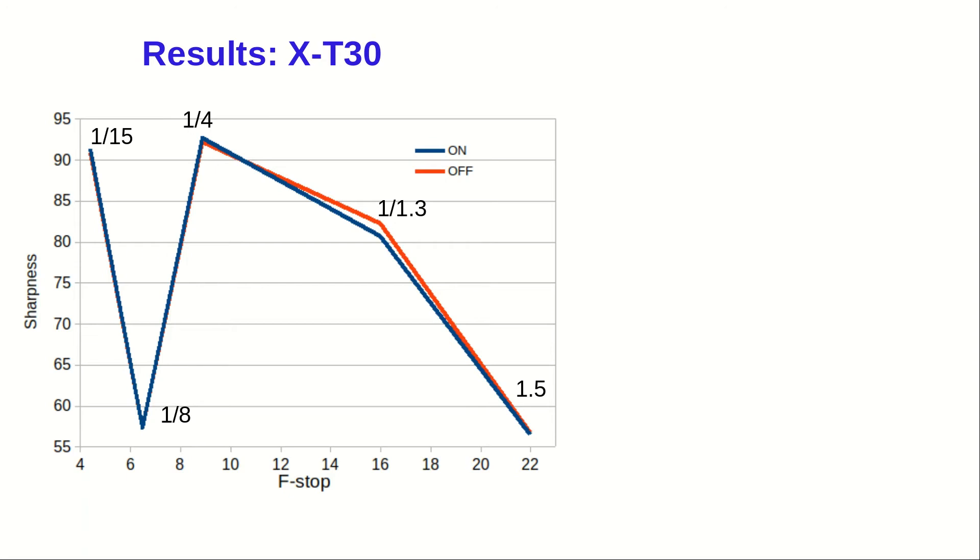At slower shutter speeds, you will see that no IS images come out sharper, but only very marginally so. At the lowest shutter speed, the difference is gone again.